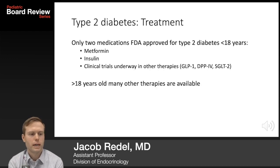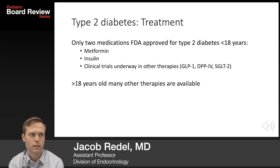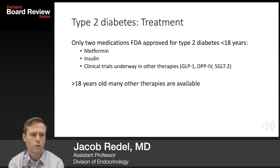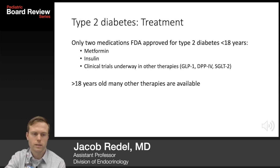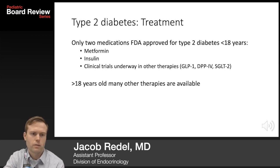Treatment for type 2 diabetes in youth is fairly straightforward now: the main treatments are metformin, and if needed, basal insulin. There are clinical trials underway looking at therapies widely used in adults. After 18 years of age, you may see patients on alternative therapies including GLP-1 agonists, DPP-4 inhibitors, SGLT-2 inhibitors, and others.